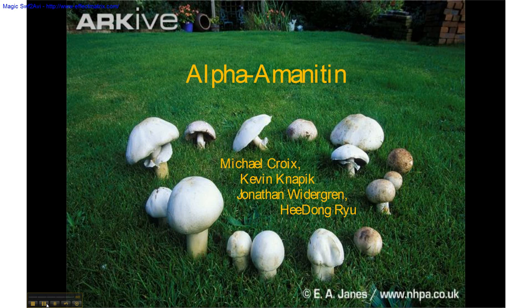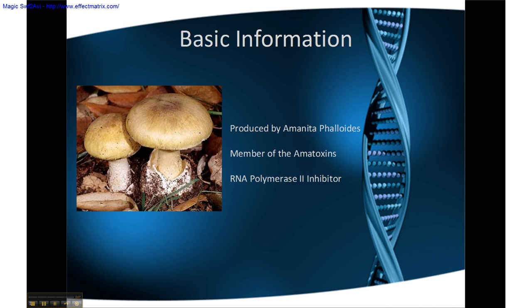My name is Jonathan Wittigren, and I will be presenting Group 7's topic, Alpha Amanitin. Alpha Amanitin is an amatoxin found commonly in Amanita phalloides, otherwise known as the death cap mushroom.